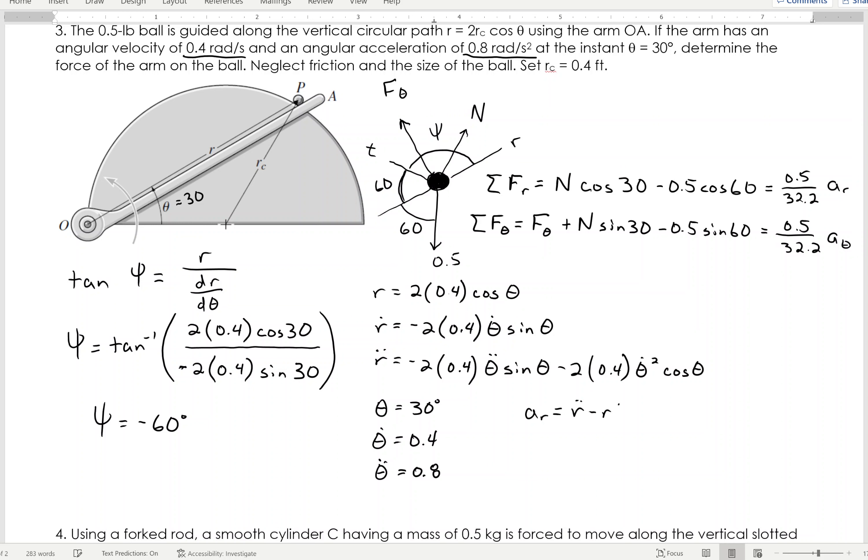From that, I can then say, AR equals R double dot minus R theta dot squared, and A theta is R theta double dot plus 2 R dot theta dot.